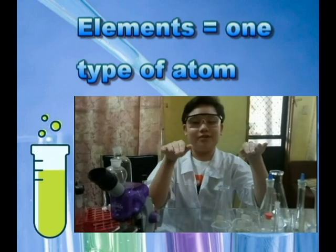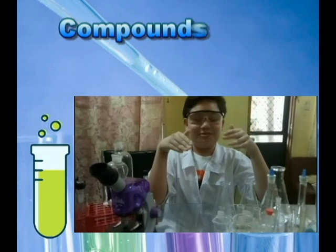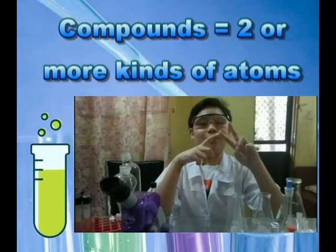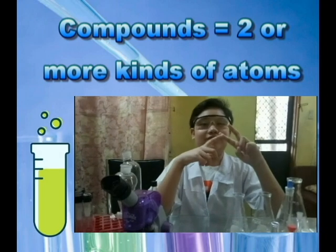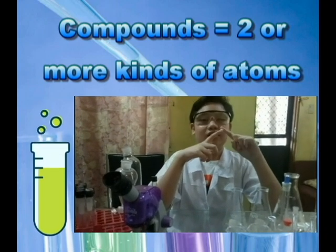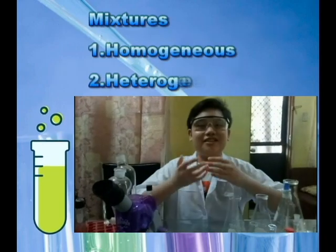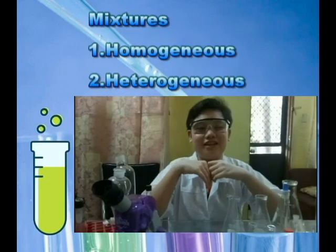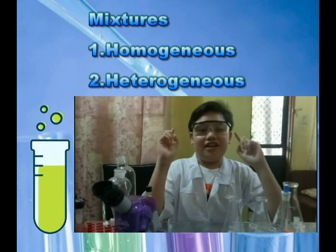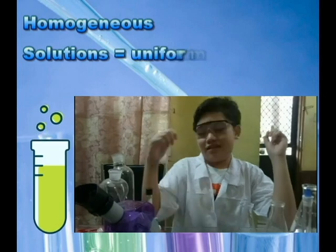Elements can't be separated into smaller or simpler substances, while compounds have two or more kinds of atoms and can be separated by chemical means.